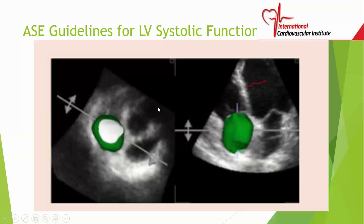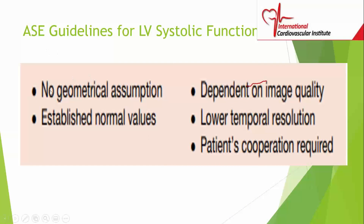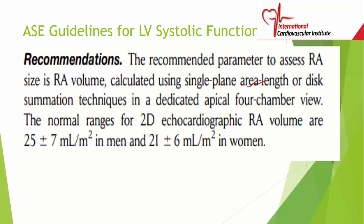The current guidelines — especially for people doing exams — specify the disc summation technique for right atrial volume; it's no longer just the area. It is more representative of actual right atrial size than linear dimensions. The recommended parameter to assess right atrial size is right atrial volume calculated using the single-plane area-length or disc summation technique in a dedicated apical four-chamber view with RV focus. The normal range for 2D right atrial volume is 25 ± 7 mls/m² in men and 21 ± 6 mls/m² in women.